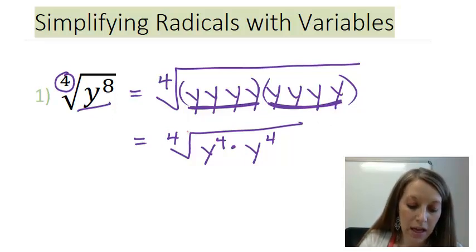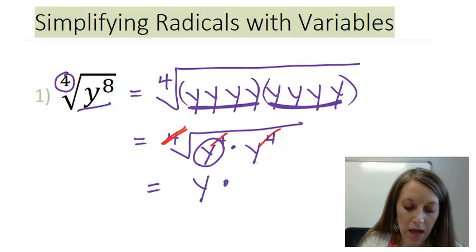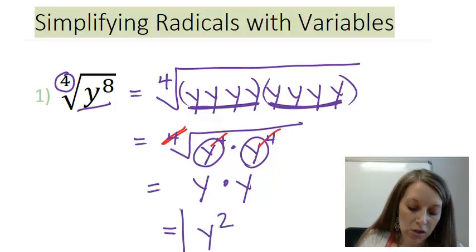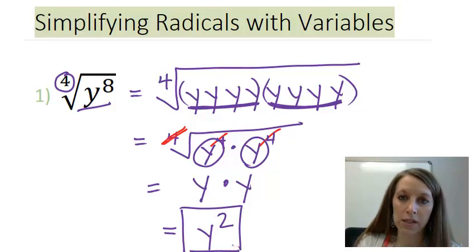So I have this fourth root of y to the fourth twice. So I basically can cancel this out each time individually. So that gives me a single y here times a single y there. And we know that y times y simplifies to be y squared. So my overall answer to this problem is y squared. Now, this is me working out every single step in this problem. But again, like I said, we want to try and skip all these steps.